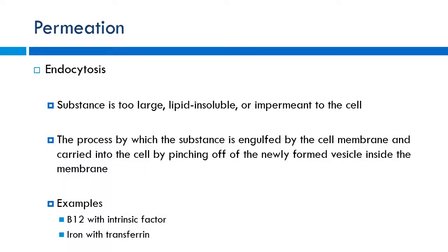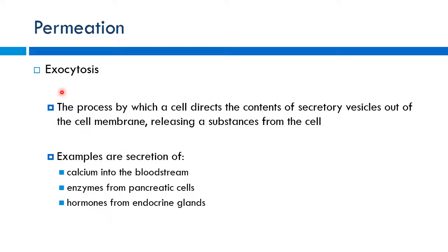Some drugs are absorbed through endocytosis — a cellular engulfing mechanism. This is good for very large molecules or lipid-insoluble substances that can't otherwise enter the cell. It's not a common absorption method but is notable. Examples include vitamin B12 absorbed with intrinsic factor — B12 deficiency can lead to anemia — and iron absorbed with transferrin. Exocytosis releases substances from the cell into the bloodstream; for example, calcium triggers release of digestive enzymes from pancreatic cells. Some hormones are also released via exocytosis.